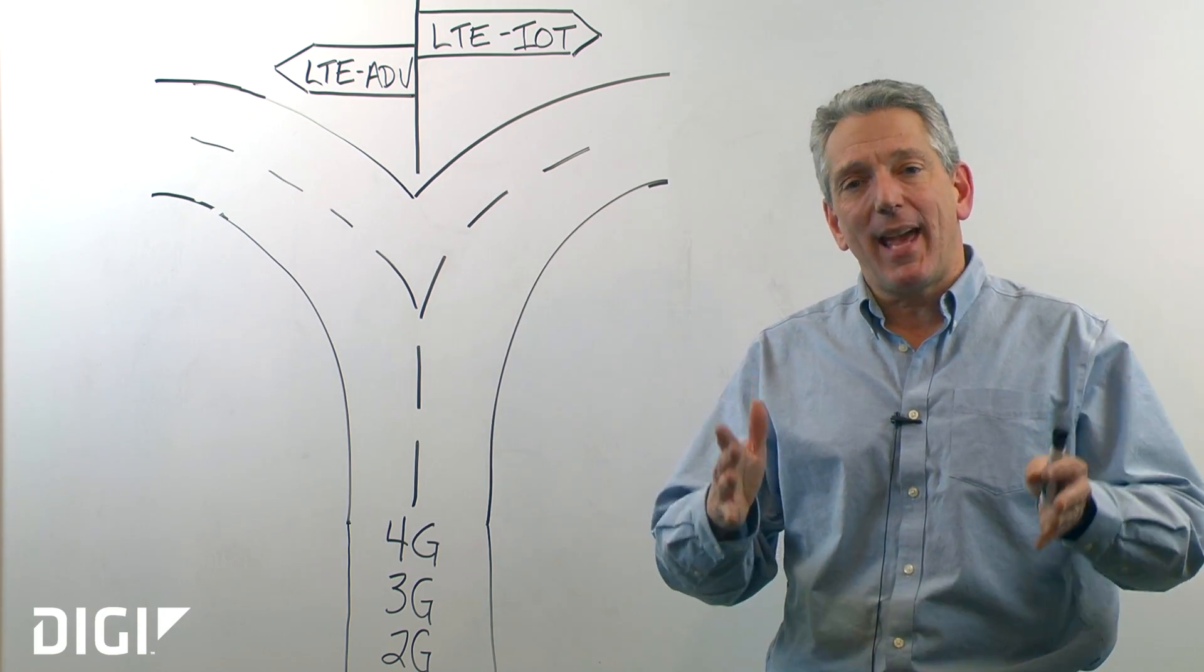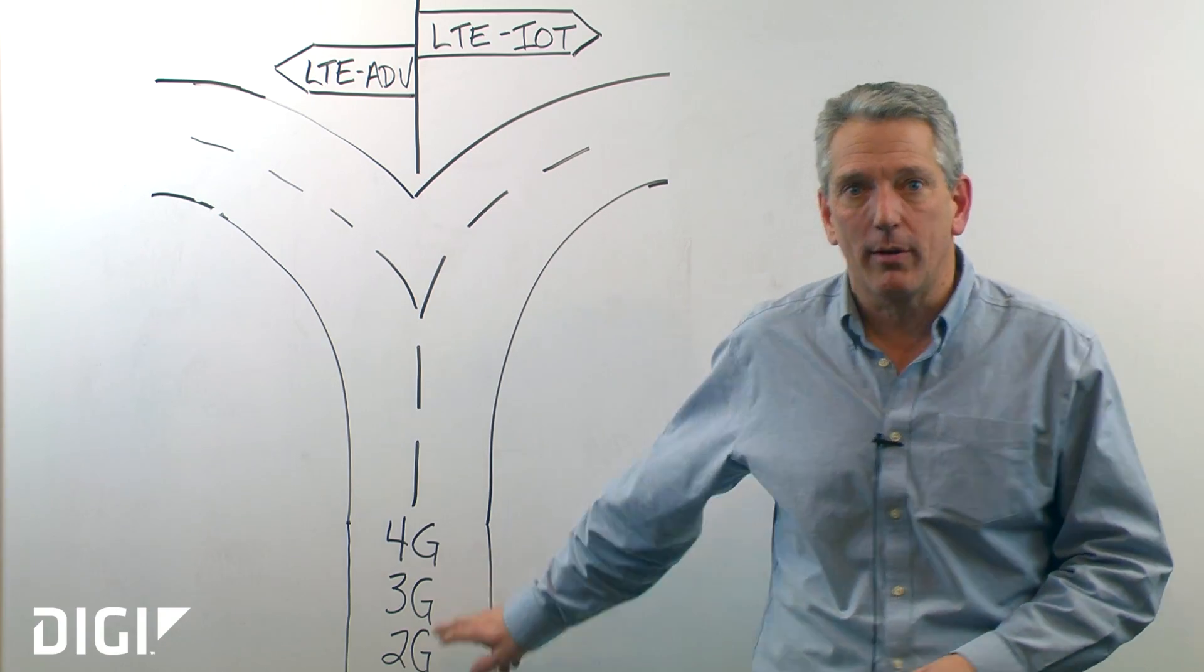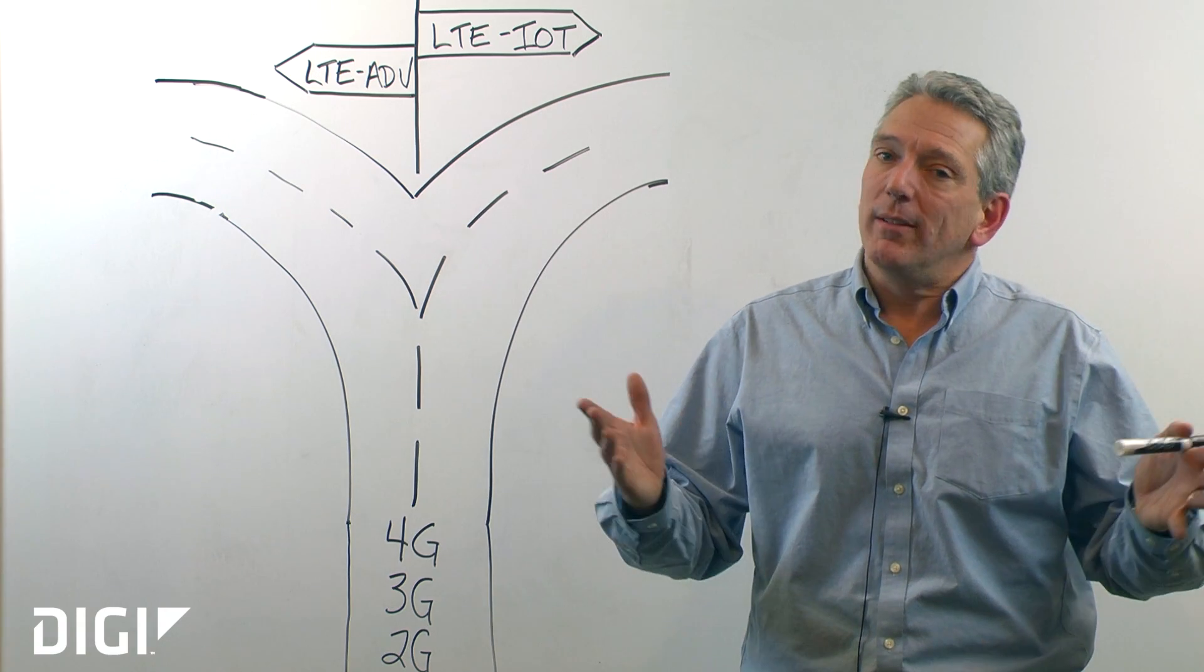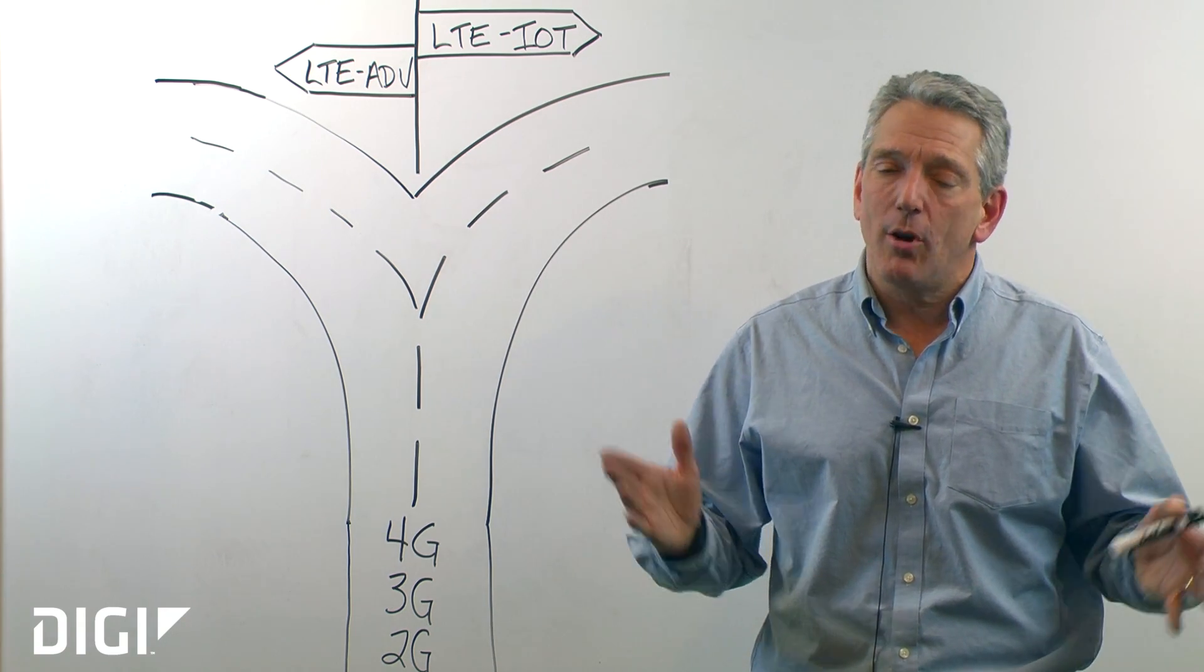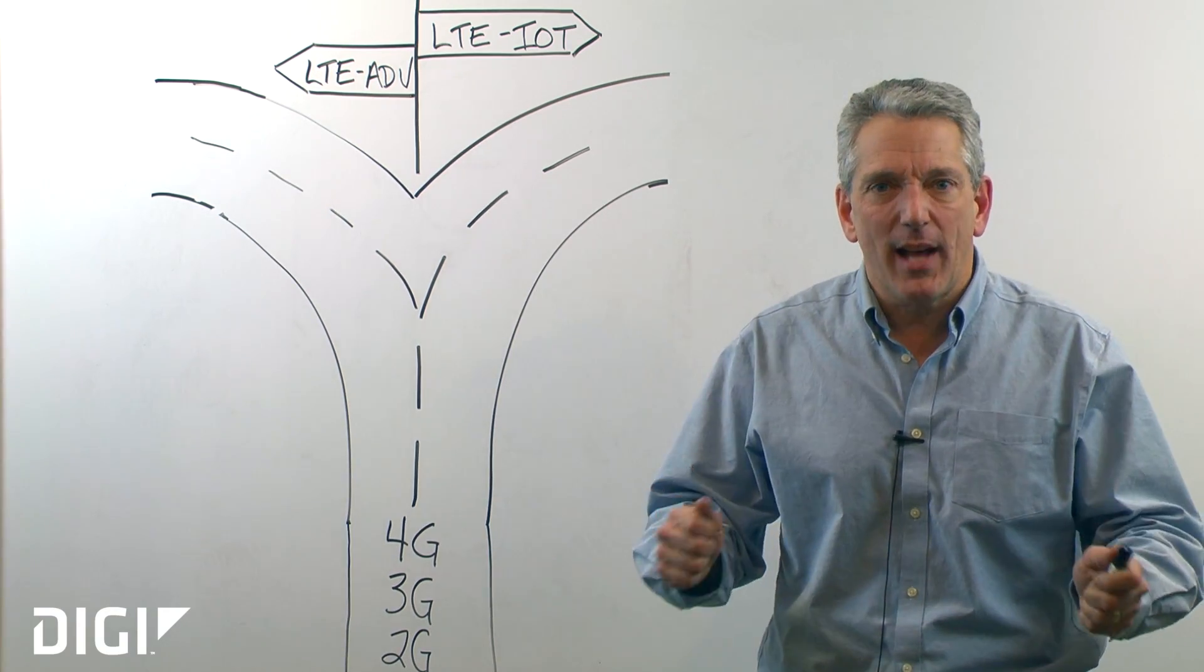So what do we want? Back then, we wanted more speeds and feeds, and so 3G was born. Something called CDMA or spread spectrum gave us a lot more bits over the line and a lot faster, less latency, still not enough.